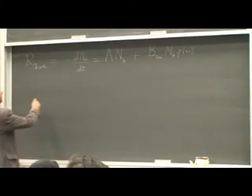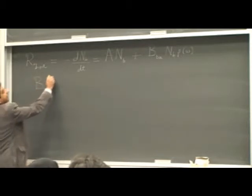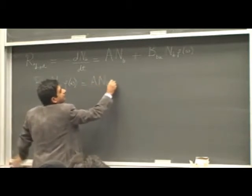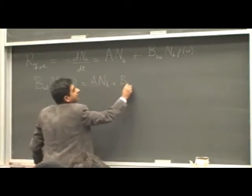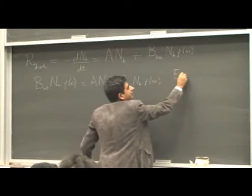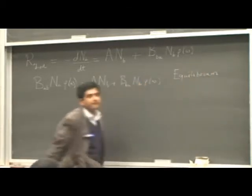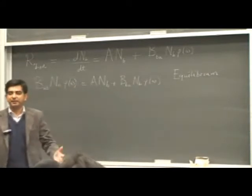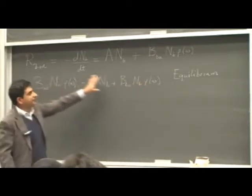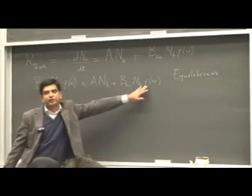We can equate the two sides and what do we get? We get B_AB N_A rho_omega plus B_BA N_B rho_omega. So this is in a state of dynamic equilibrium — this is where absorption and emission match. Now let's rearrange this equation and make the density of states of photons.